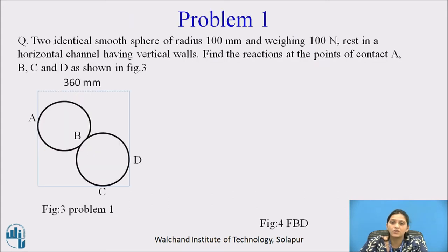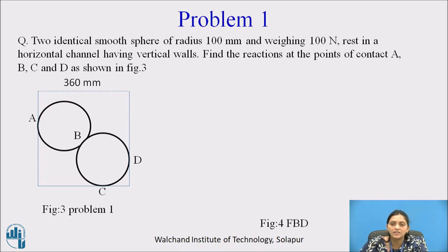Now we will solve a numerical. Two identical smooth spheres of radius 100 mm and weight 100 Newton rest in a horizontal channel having a vertical wall. Find the reaction at points of contact A, B, C, and D as shown in the figure.